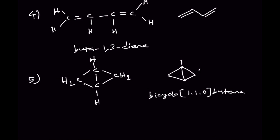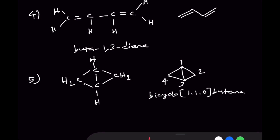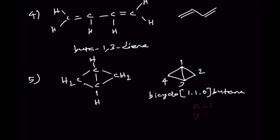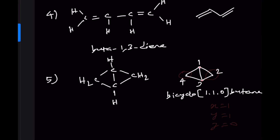The numbering goes 1, 2, 3, 4 — so x equals 1, y equals 1, and z equals 0 because no carbon atoms are on the bridge; the bridge heads are directly connected. Therefore it is bicyclo[1.1.0] and with four total carbons the parent chain is butane.